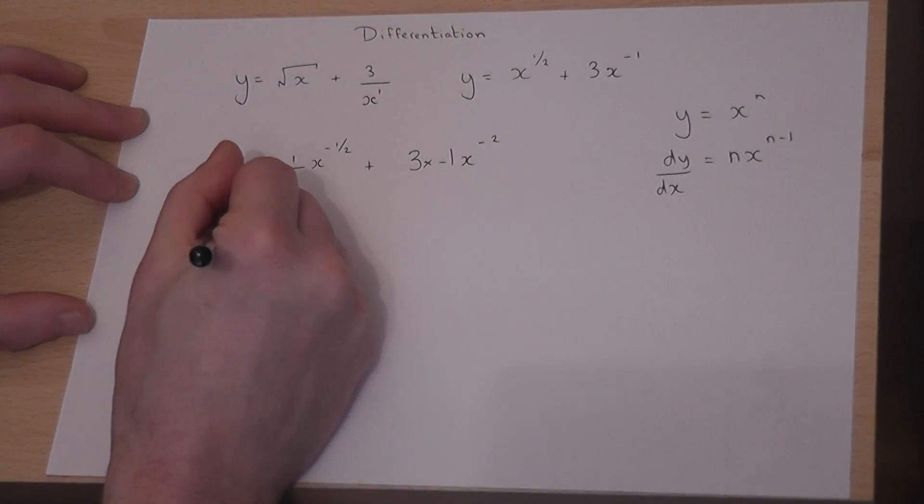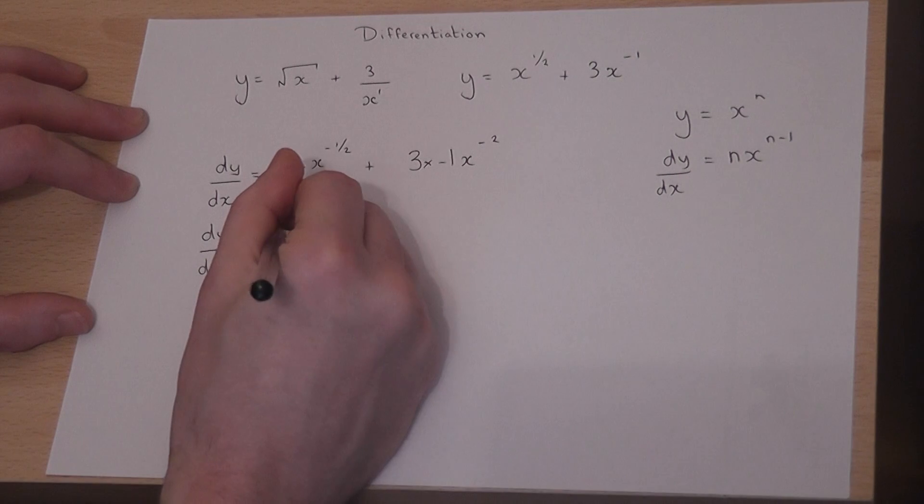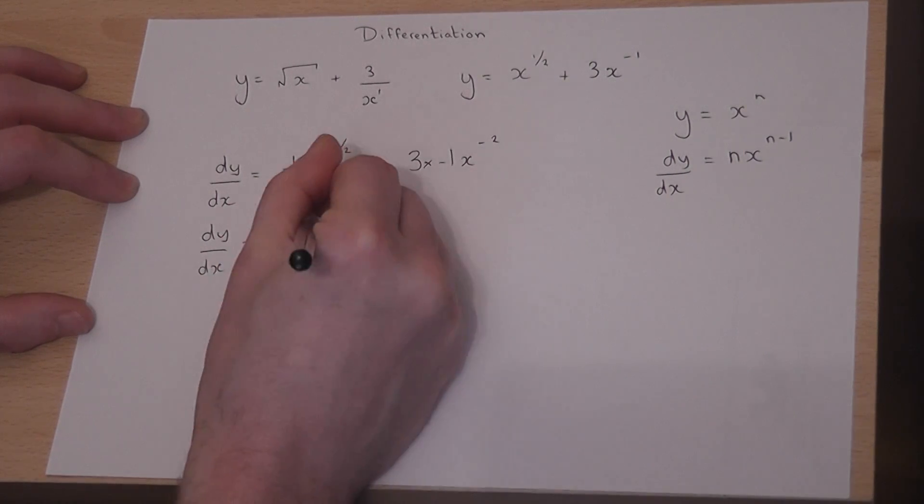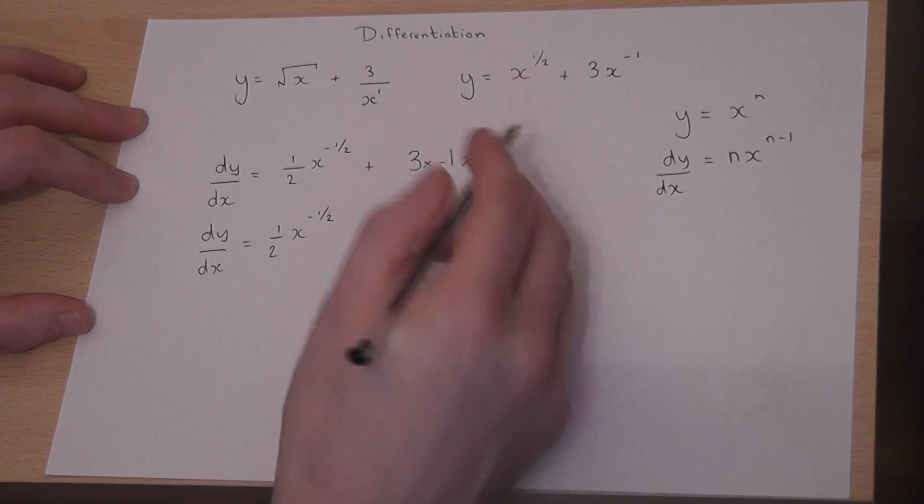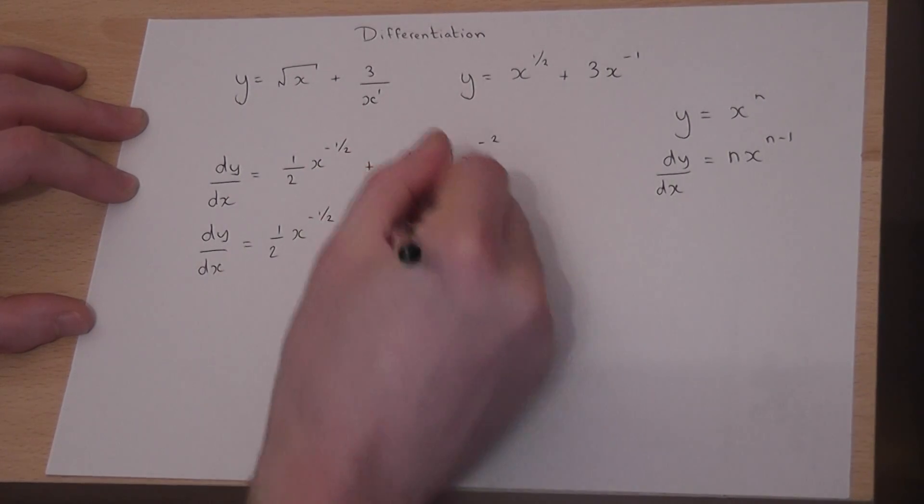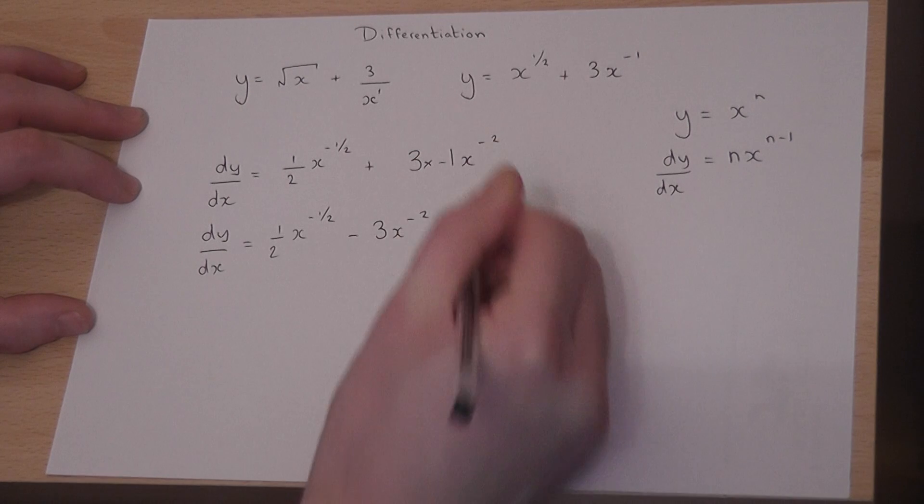This is not yet the complete answer. We can make this a bit simpler. We'll leave this as a half x to the power of minus a half. Now 3 times minus 1 is minus 3, x to the power of minus 2.